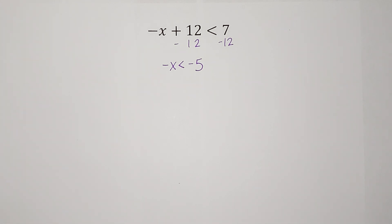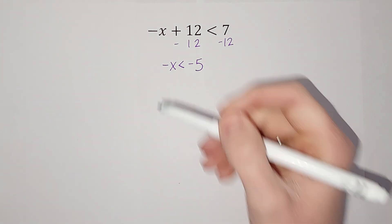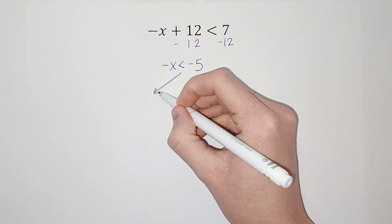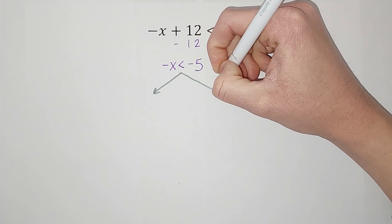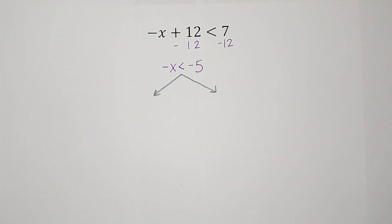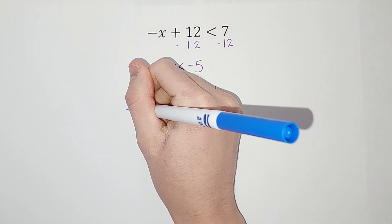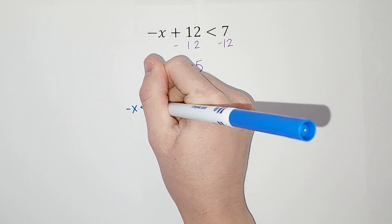And there are two ways we could use to get x to be positive. So look at this. We are going to look at these two different ways. One way would be, all right, we've got our negative x is less than negative 5.